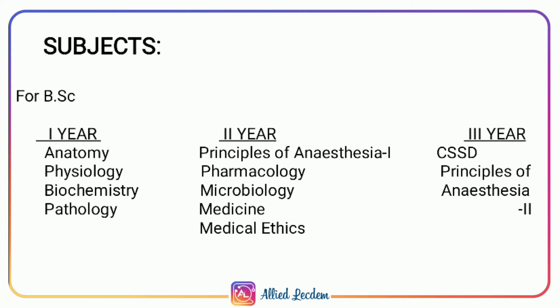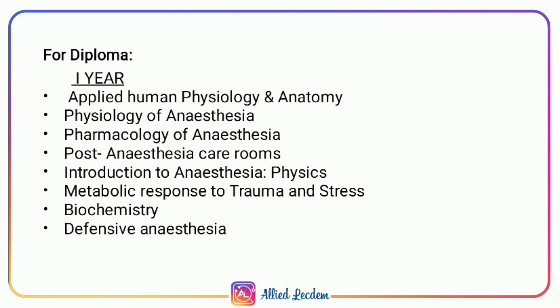For 3rd year: CSST, Principles of Anesthesia Paper 2, plus practicals. Subjects for Diploma 1st year: Applied Human Physiology and Anatomy, Physiology of Anesthesia, Pharmacology of Anesthesia, Post-Anesthesia Care, Introduction to Anesthesia, Physics, Metabolic Response to Trauma and Stress, Biochemistry, and Defensive Anesthesia.